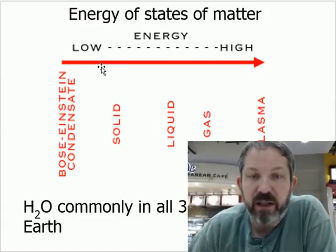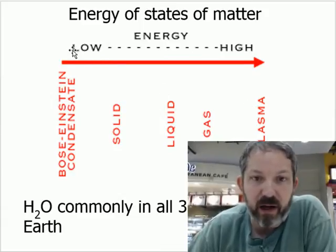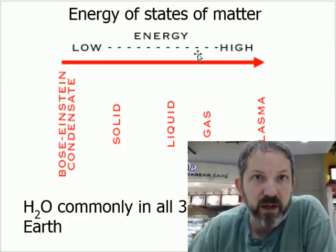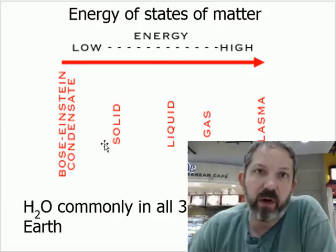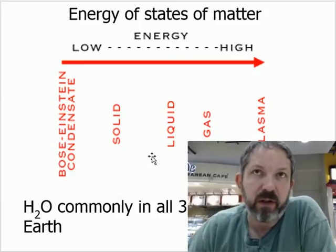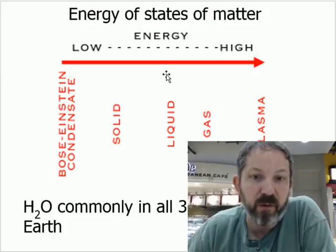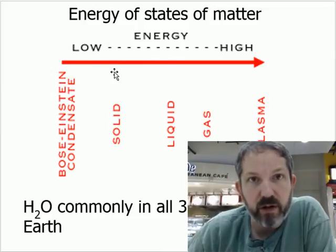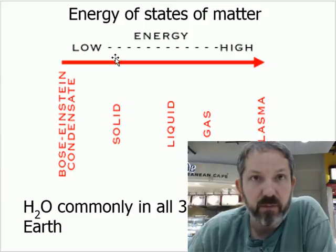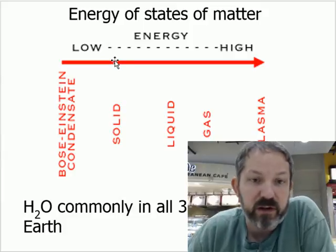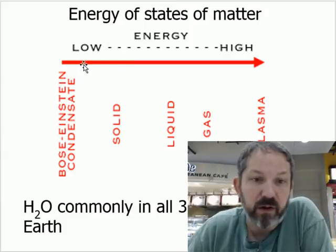You see plasma conditions inside a nuclear reaction and inside any star. Stars are carrying out constant nuclear fusion, including our own sun. How much energy is in the matter determines what state it will be in, and this changes with different types of matter. So iron is going to stay solid until very, very hot before it melts and becomes liquid, whereas water will be solid until it melts at 32 degrees Fahrenheit or zero degrees Celsius.